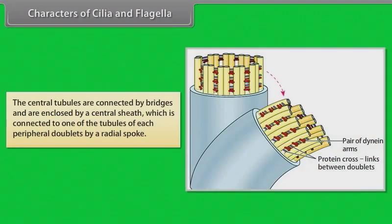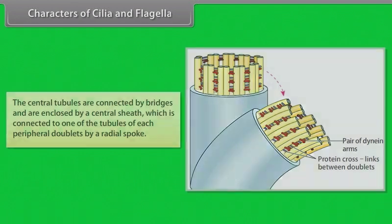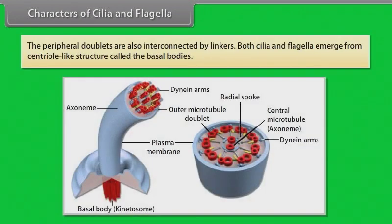The central tubules are connected by bridges and are enclosed by a central sheath, which is connected to one of the tubules of each peripheral doublet by a radial spoke. The peripheral doublets are also interconnected by linkers. Both cilia and flagella emerge from a centriole-like structure called the basal bodies.